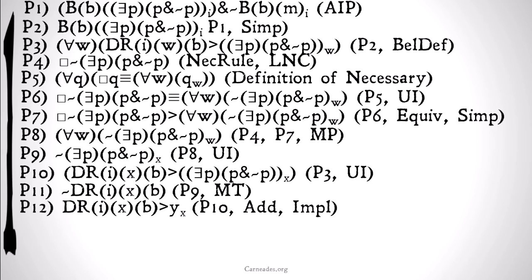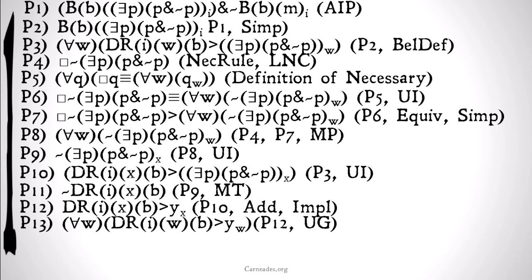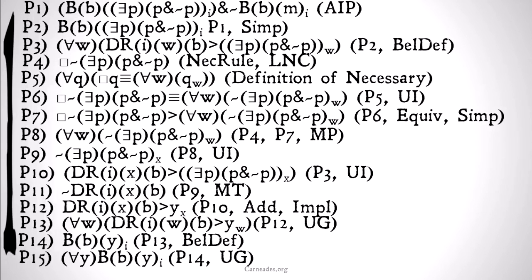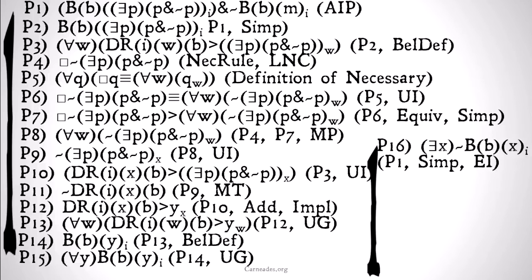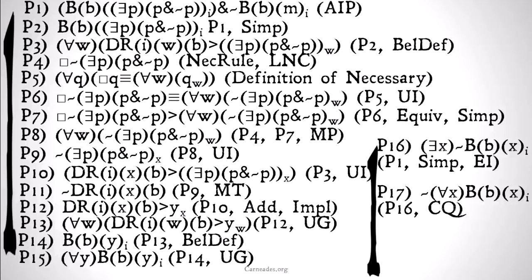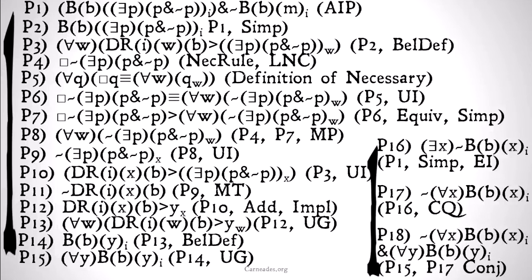With addition and implication — this is the vacuously true part — we get that for all worlds I and X, if I bears the doxastic accessibility relation for Bill, then for all worlds X, any Y is true in X. Universal generalization enforces this: for all worlds W such that I bears the doxastic accessibility relation to W for Bill, Y is true — anything is true. We use the belief definition to conclude that Bill believes any Y, or for all Y, Bill believes Y. Continuing the indirect proof, from premise one by simplification and existential instantiation there exists some X such that it's not the case that Bill believes X. Change of quantifier gives us: it's not the case that for all X, Bill believes X. Therefore we have a contradiction: it's not the case that Bill believes all X, but for all Y, Bill believes Y.